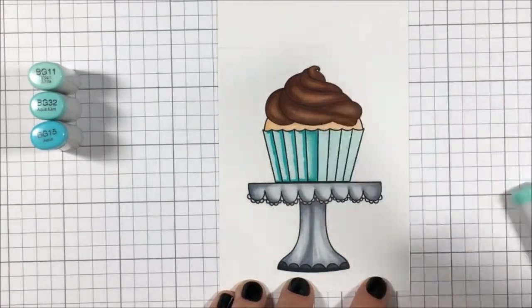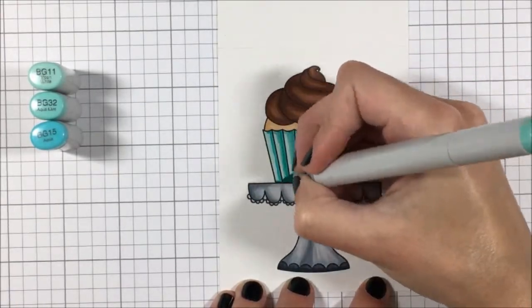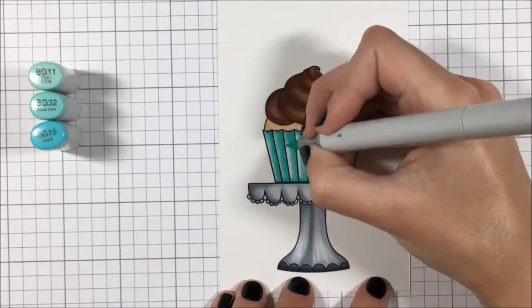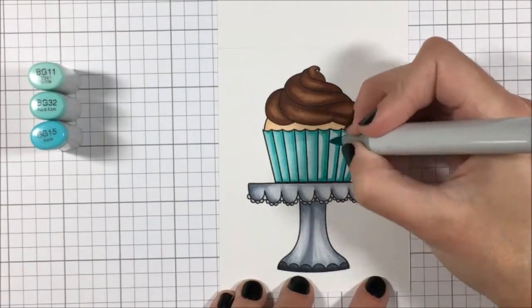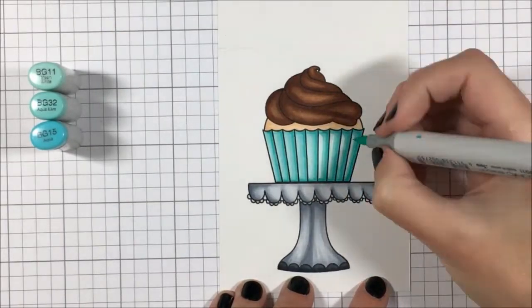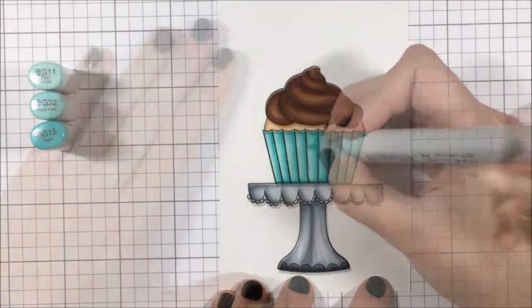I've come in and colored my little cupcake top with some peachy colors and now I'm coming in with my BGs to do the cupcake wrapper. I'm focusing those shadows towards the right side and the highlights towards the left and again I'm trying very hard not to be heavy-handed.